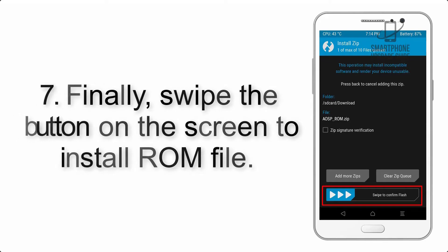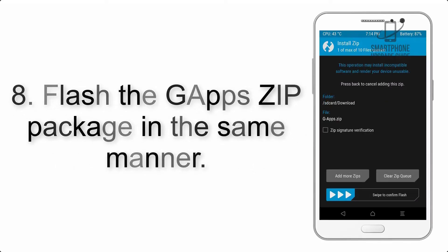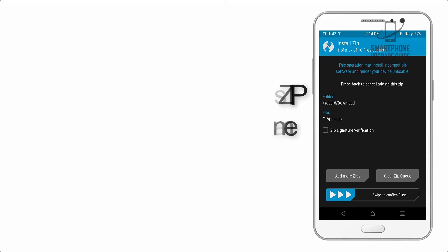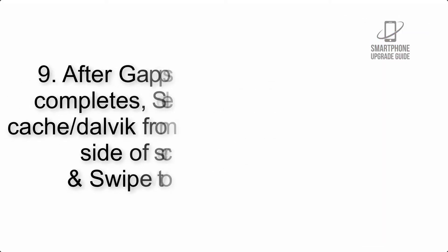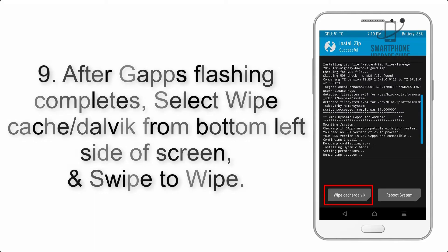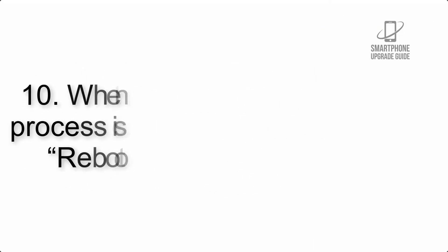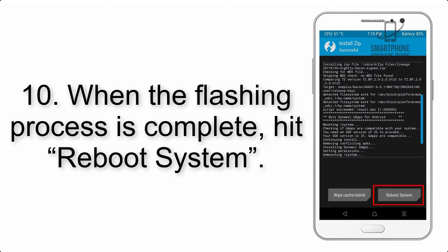Step 7: Swipe the button on the screen to install the ROM file. Step 8: Flash the GApps zip package in the same manner. Step 9: After GApps flashing completes, select Wipe Cache and Dalvik from the bottom left side of the screen and swipe to wipe.